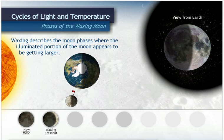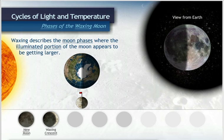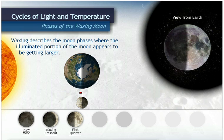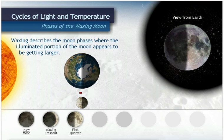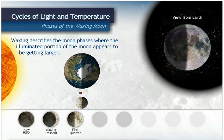When the entire right half of the moon is visible and the left half is dark, we call it first quarter moon. This is because the moon has completed one quarter of its phases.